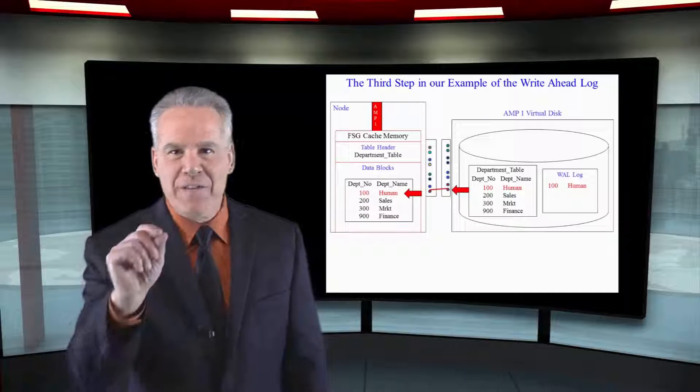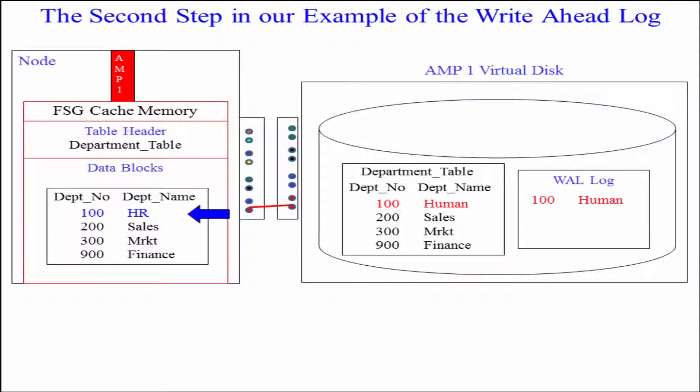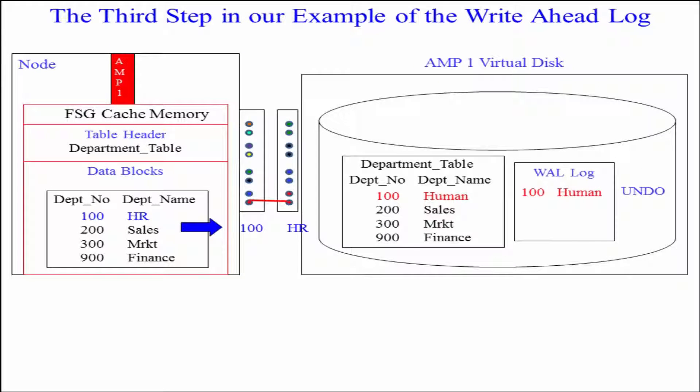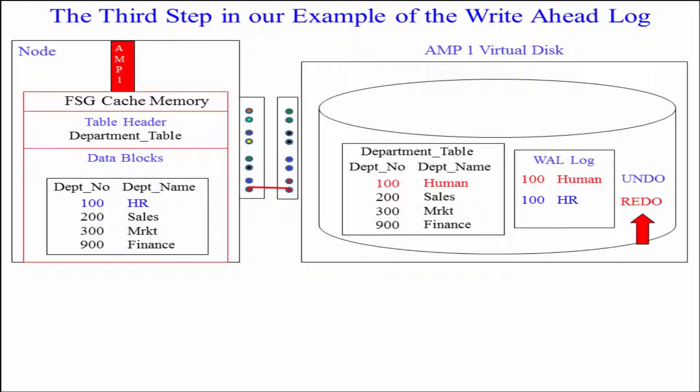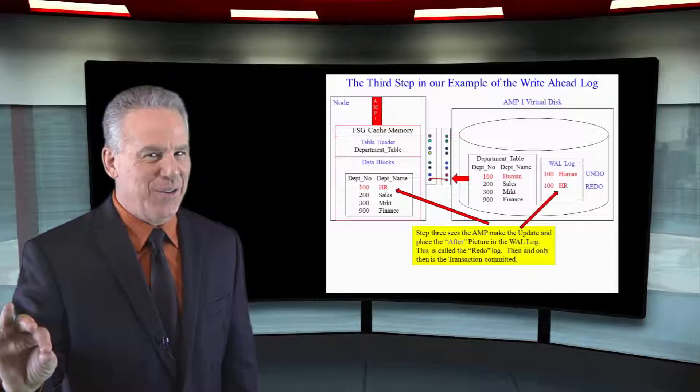Now in FSG cache where everything always happens in memory we're going to make the change from human to HR and then we're going to take another picture of that row after that update and we're going to also write that to the wall log. Now we have the undo and the redo log.